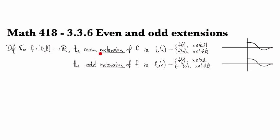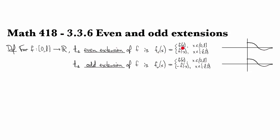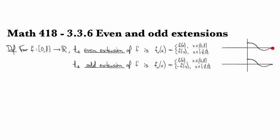And so the even extension of F is denoted F sub E, like even part. And the way it's defined is it's defined to be exactly like F on the positive part that already exists over here.